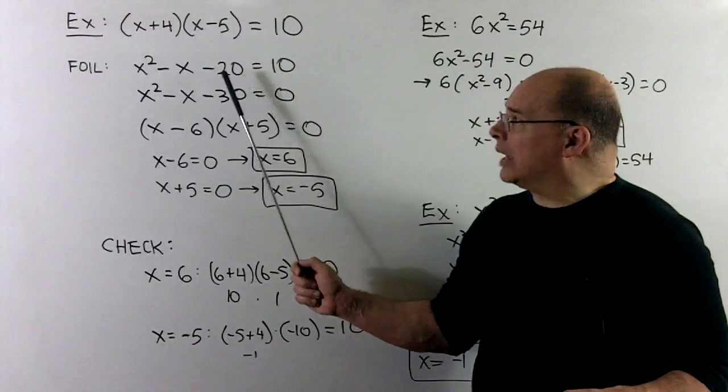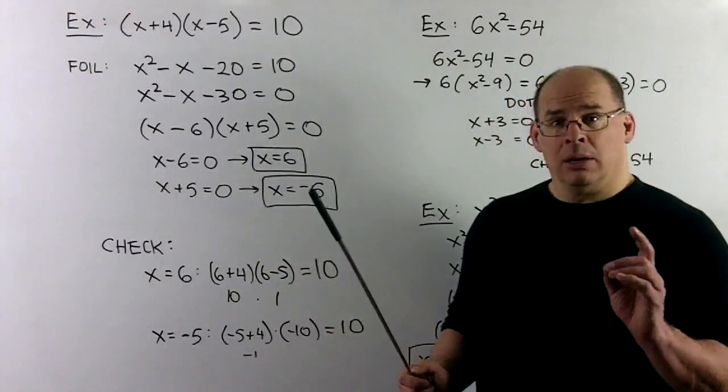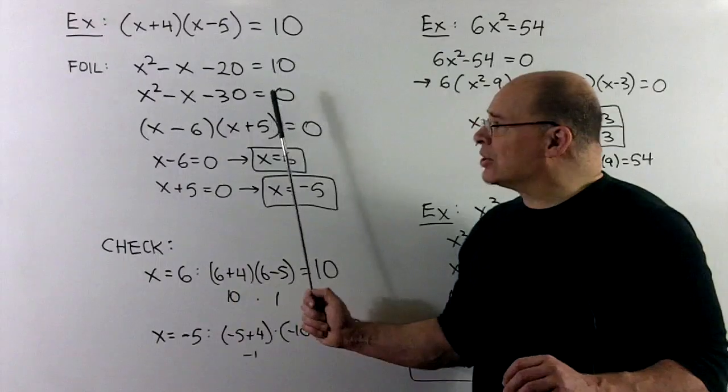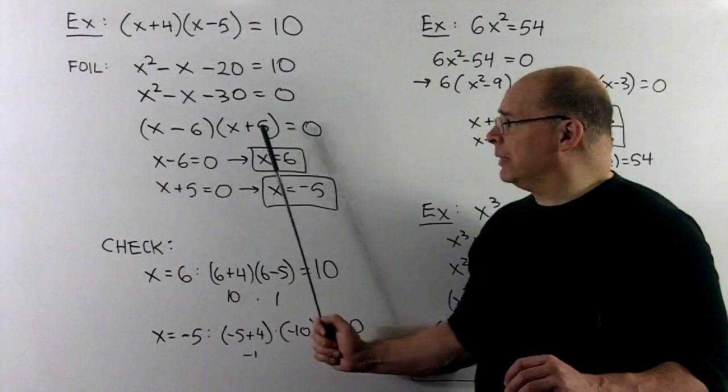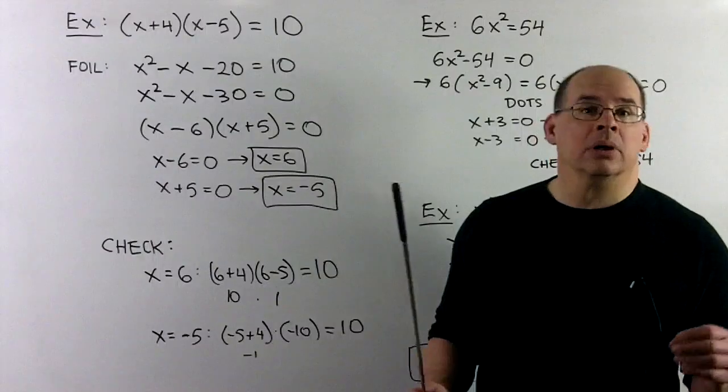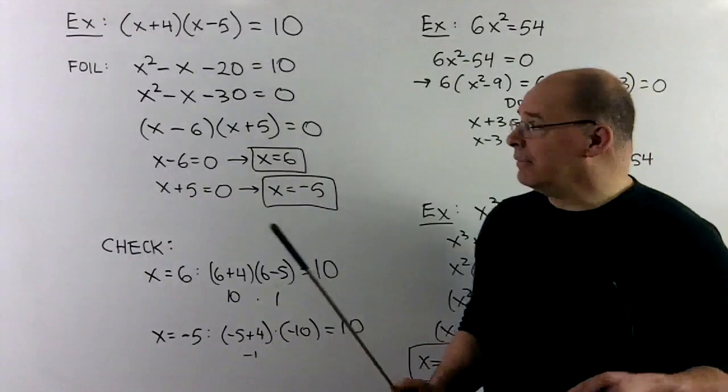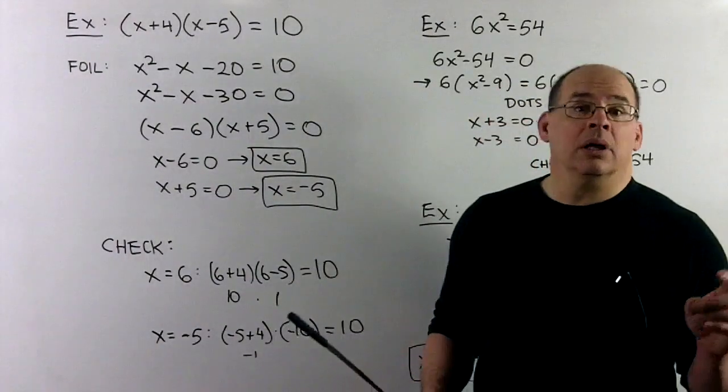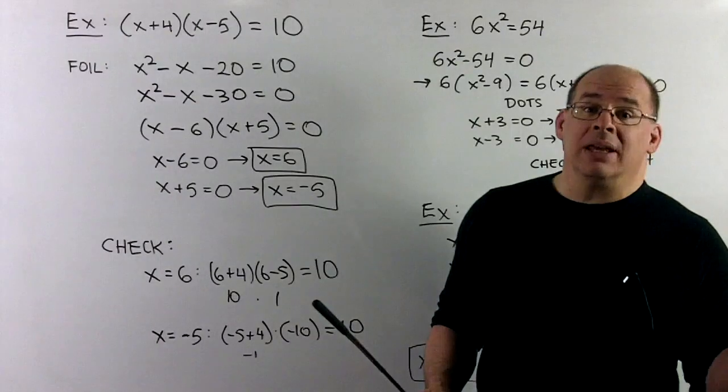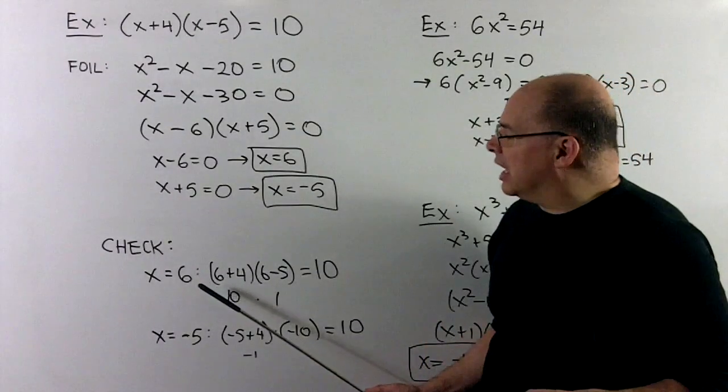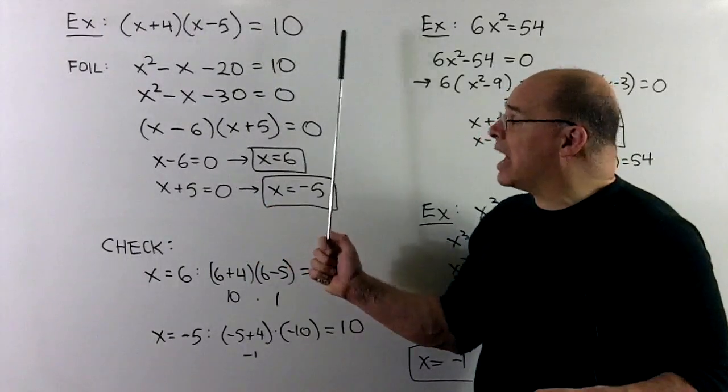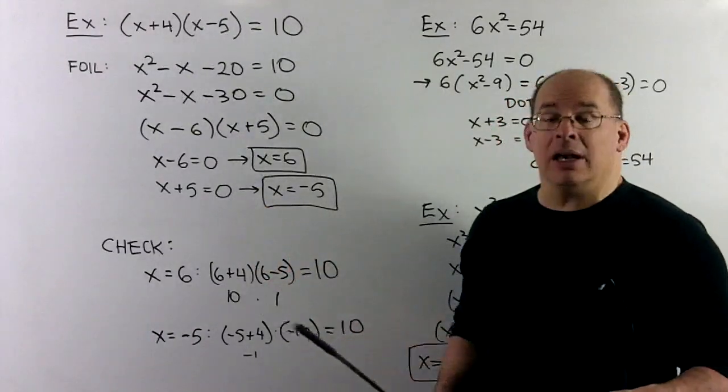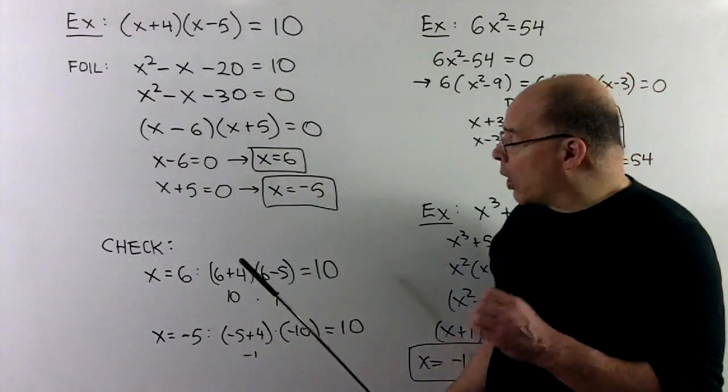We foil our two by two. We do the work. We get x squared minus x minus 20 equals 10. Push the 10 to the other side. We get x squared minus x minus 30 equals zero. This factors as x minus 6, x plus 5 equal to zero. We set each factor equal to zero and solve. That'll give us x equal to 6 and x equal to minus 5. That's our solution. Now, we check. If I put the 6 in to the original, we'll get 10 times 1 is 10. If we put minus 5 in the original, we get minus 1 times minus 10, also equal to 10. So our work checks out. This one, another one to be careful with.